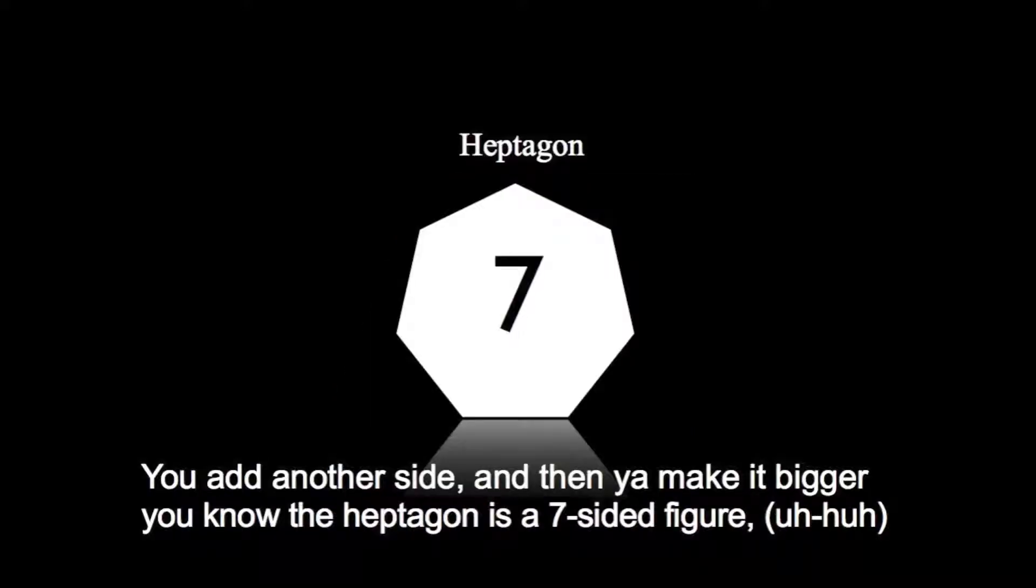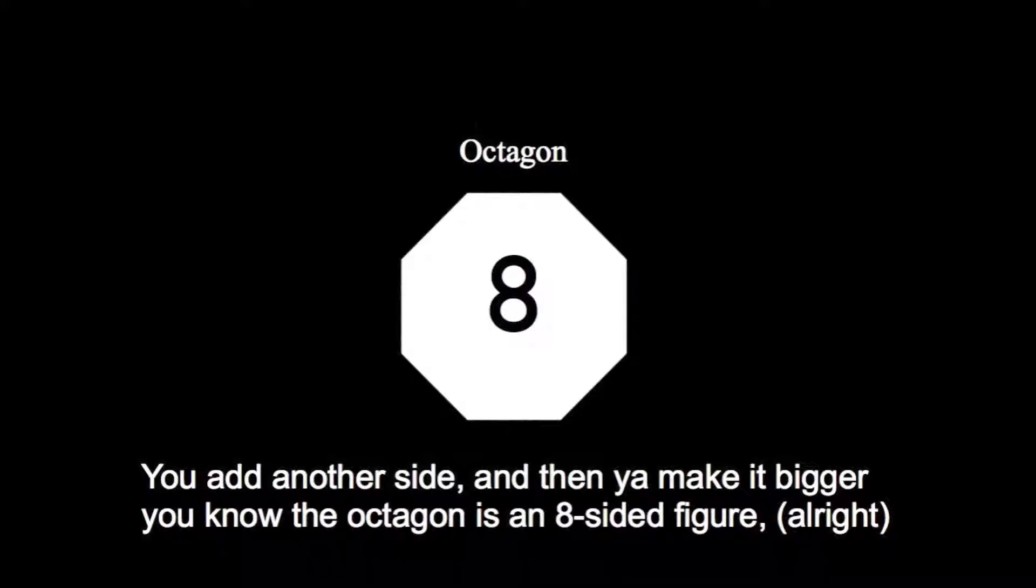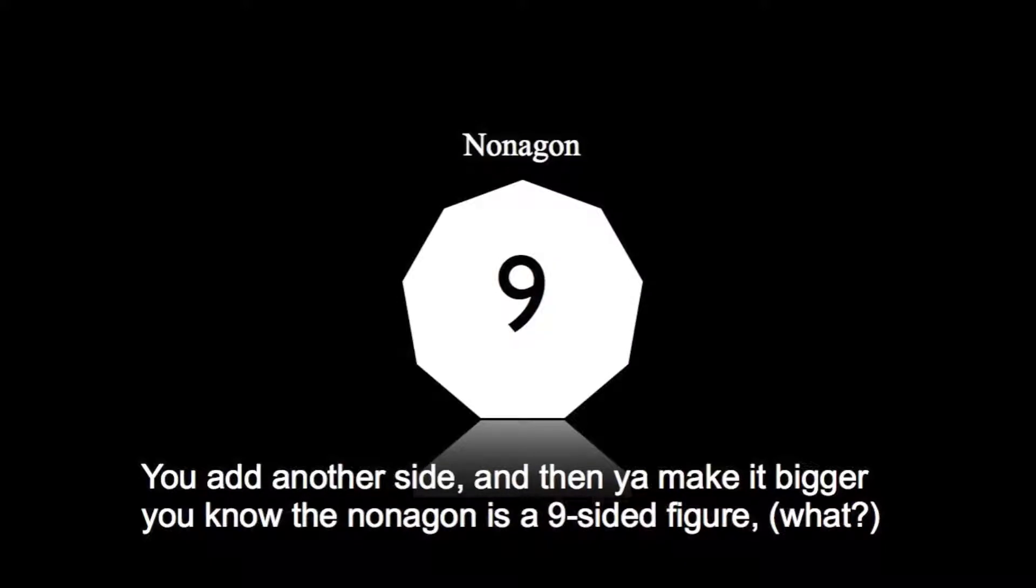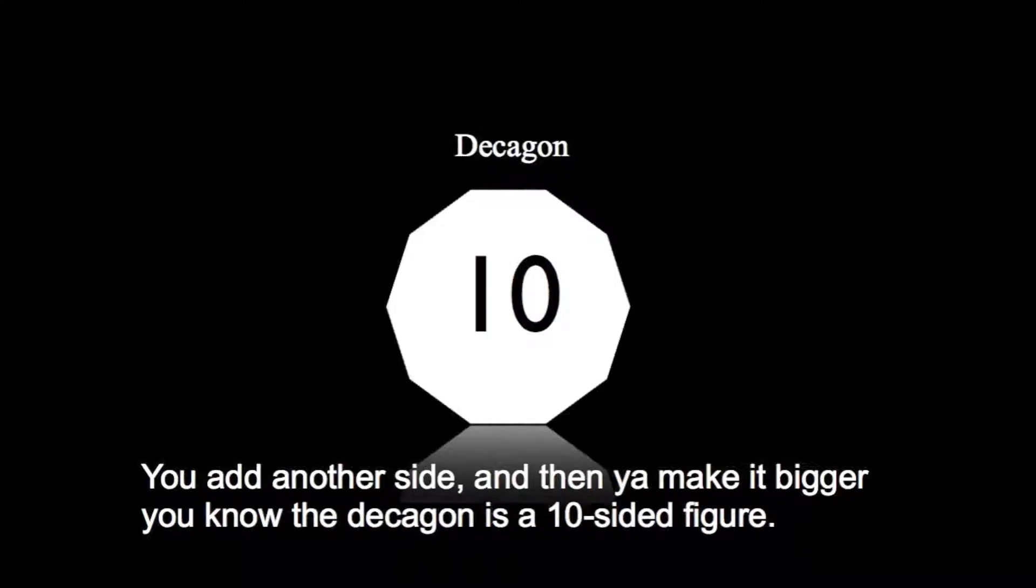You add another side and then you make it bigger. You know the heptagon is a seven-sided figure. You add another side and then you make it bigger. You know the stop sign is an eight-sided figure. You add another side and then you make it bigger. You know the nonagon is a nine-sided figure. You add another side and then you make it bigger. You know the decagon and it's ten side effects.